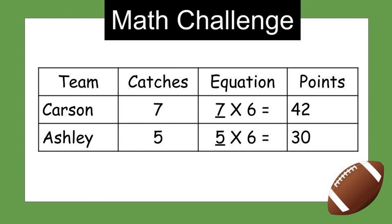When you multiply seven times six, you might want to think of it as seven times five first — that equals 35 — then add seven more to get 42 points for Carson. For Ashley, it's easy to find the product. Five times six: just count by fives six times — 5, 10, 15, 20, 25, 30 — for a total of 30 points for Ashley. So congratulations, Carson — you won the math challenge today!